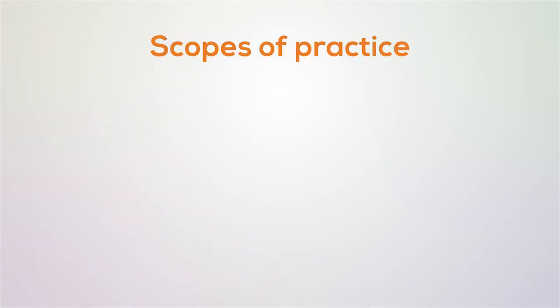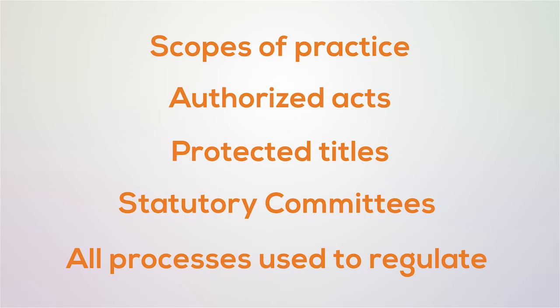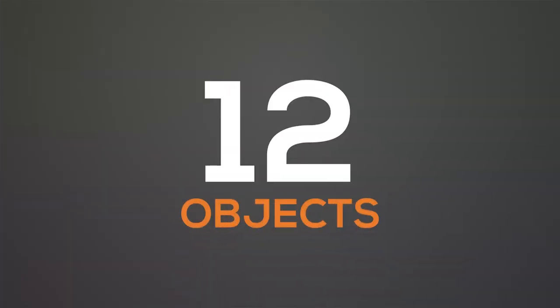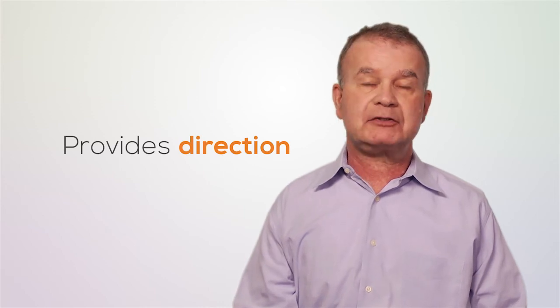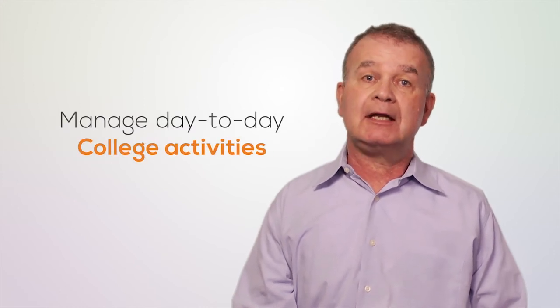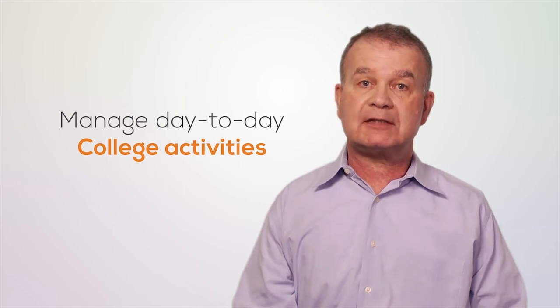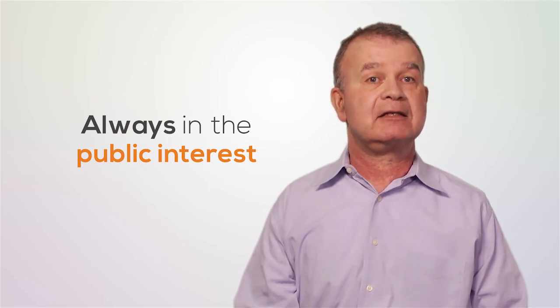The Code, the profession-specific acts and regulations, include key provisions that allow colleges to regulate their professions. These include scopes of practice, authorized acts, protected titles, statutory committees, and all the processes that we use to regulate professions. The Code has 12 objects that define the essential duties of colleges. The Code also includes a requirement that when fulfilling their objects, colleges have a duty to act in the interest of the public. The council's role is to provide organizational direction for a profession's college by establishing a mission, a vision, and by setting policy. Staff's role, including the role of the Registrar, is to manage the day-to-day activities of the college within the policies established by the council, always keeping in mind the obligation to act in the interest of the public.